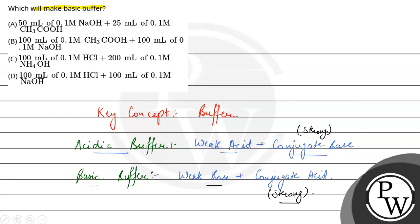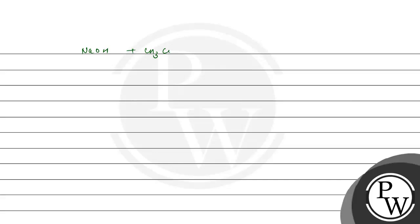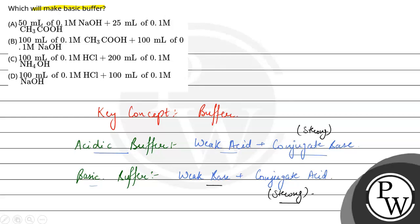Looking at option A: 50 ml of 0.1 molar NaOH plus 25 ml of 0.1 molar acetic acid. The compounds are NaOH and acetic acid. NaOH is a strong base and acetic acid is a weak acid. So this combination is strong base plus weak acid — it will not make a basic buffer.